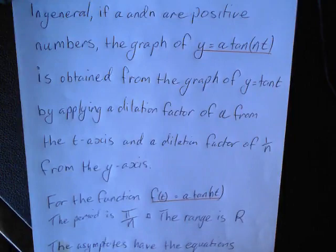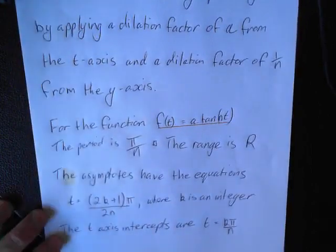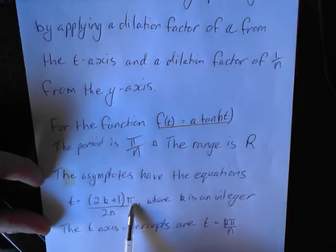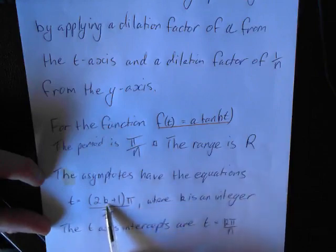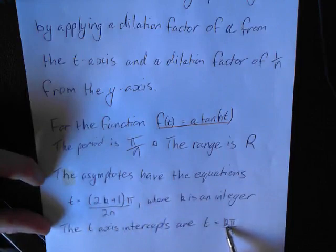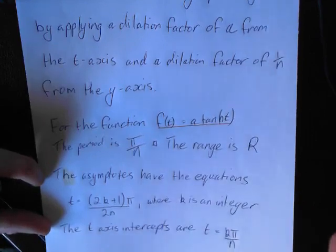We can also use this formula to work out where the asymptotes are. When you're sketching a tan graph, that's really what you need to know. The asymptotes have the equation t equals (2k + 1)·π / (2n), where k is an integer. To find the asymptotes, substitute in k = 0, 1, 2, 3 or negative values, and you'll get the values of where the asymptotes are. Similarly, substituting integers gives the successive t-axis intercepts. You need that information to construct a tan graph.